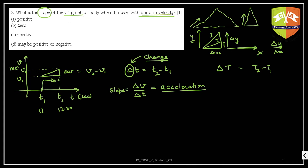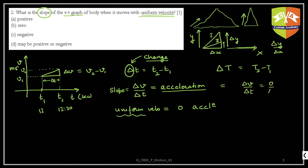Now the question asks: what is the slope of the v-t graph when a body moves with uniform velocity? Uniform velocity means zero acceleration — velocity is not changing, hence it is uniform. If delta v is zero, then delta v divided by delta t equals zero divided by delta t, so slope equals zero.